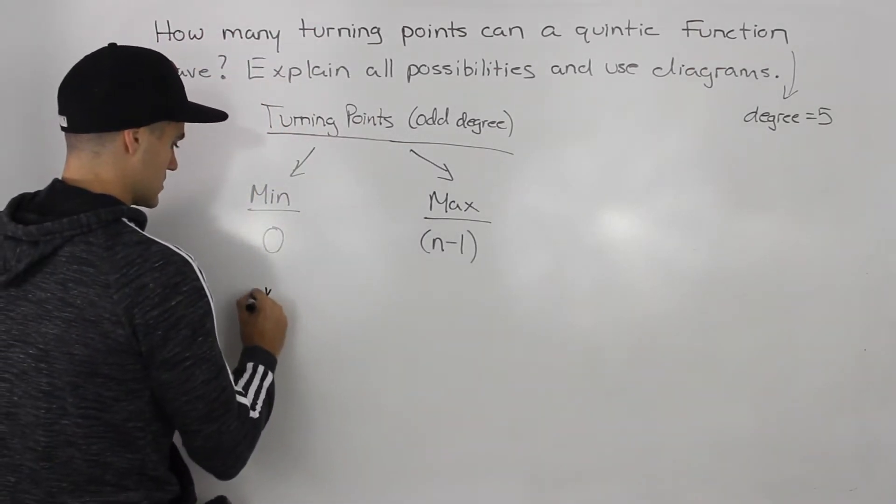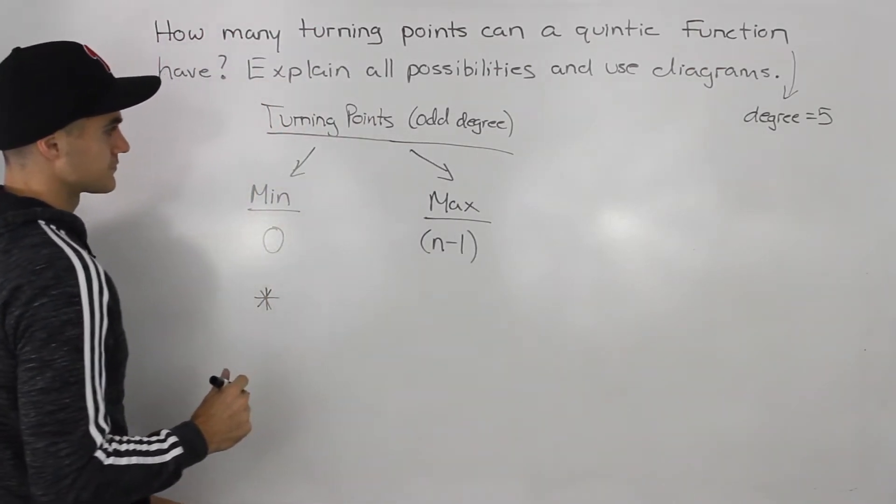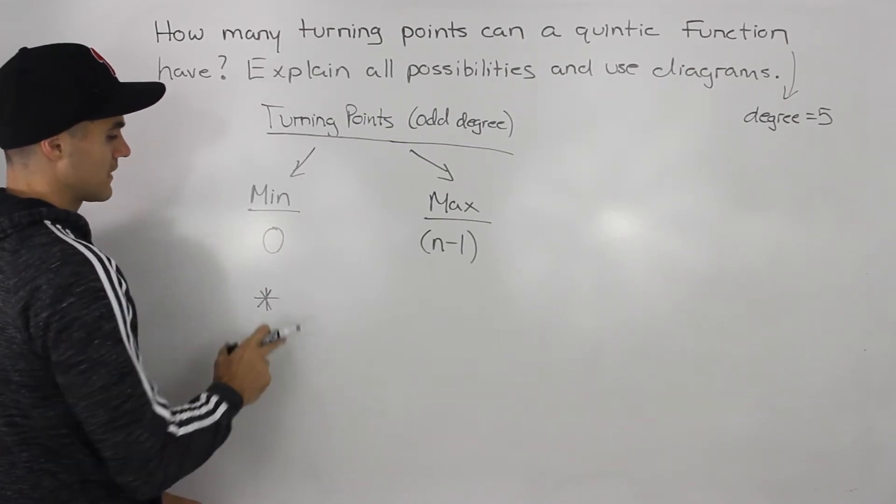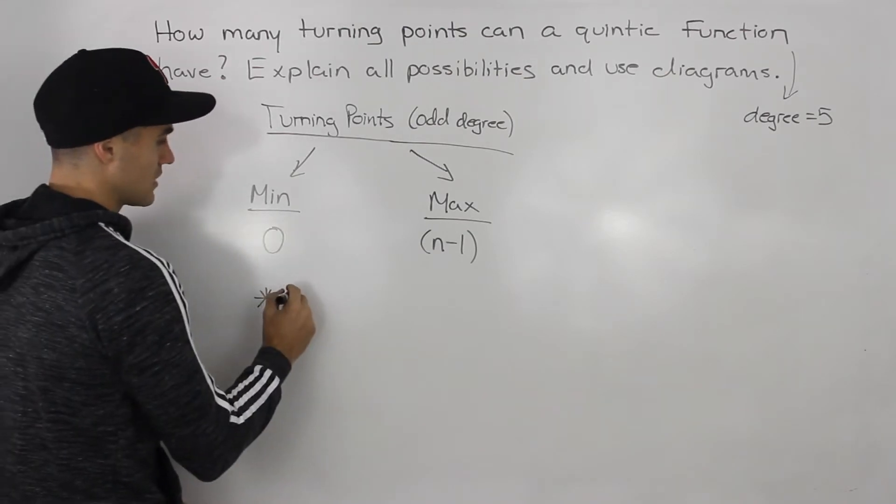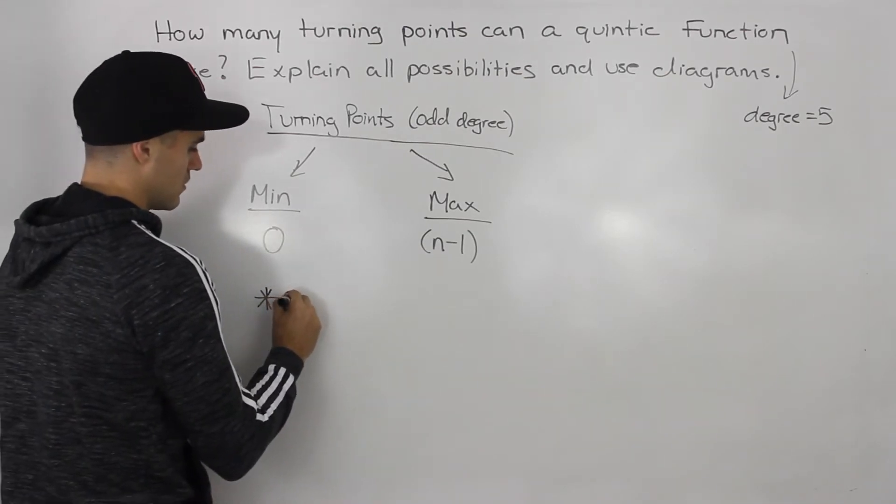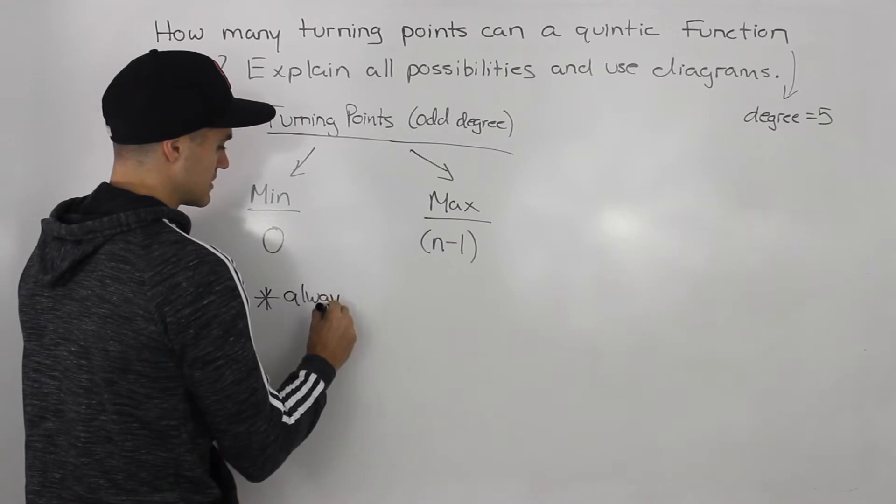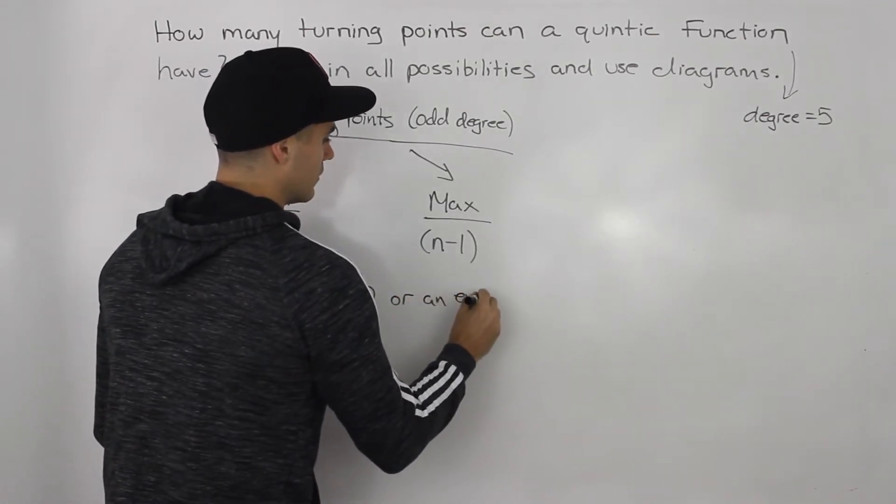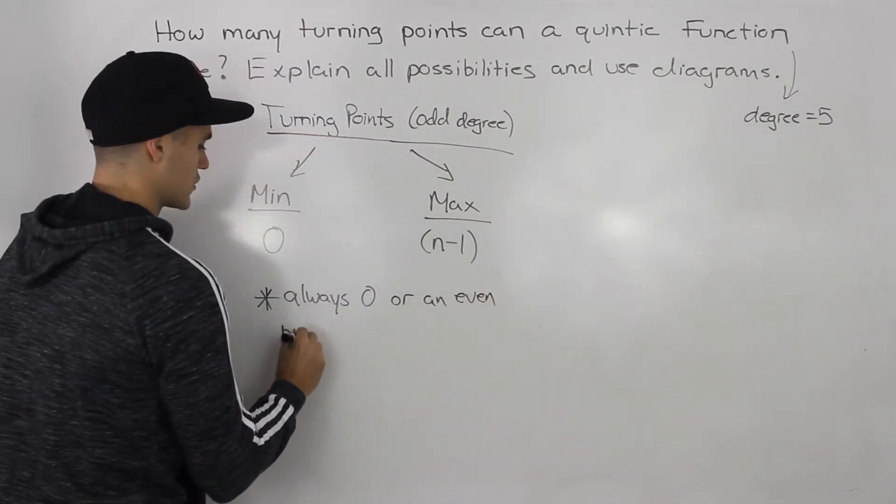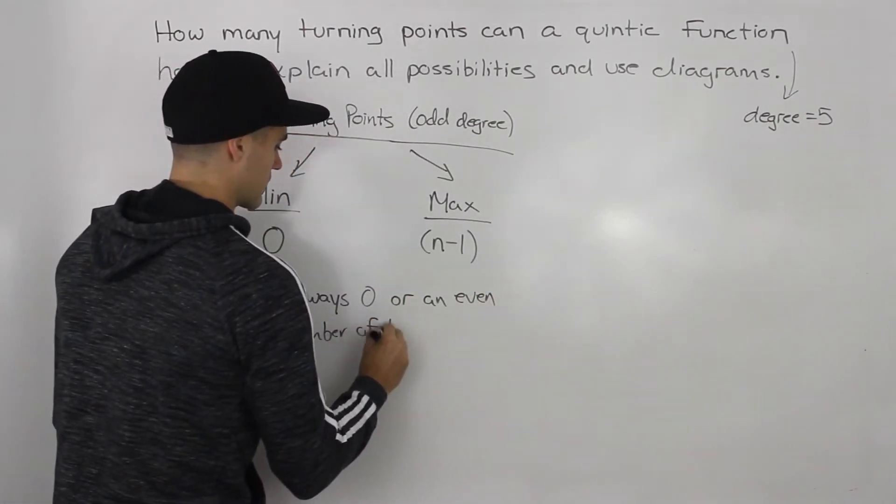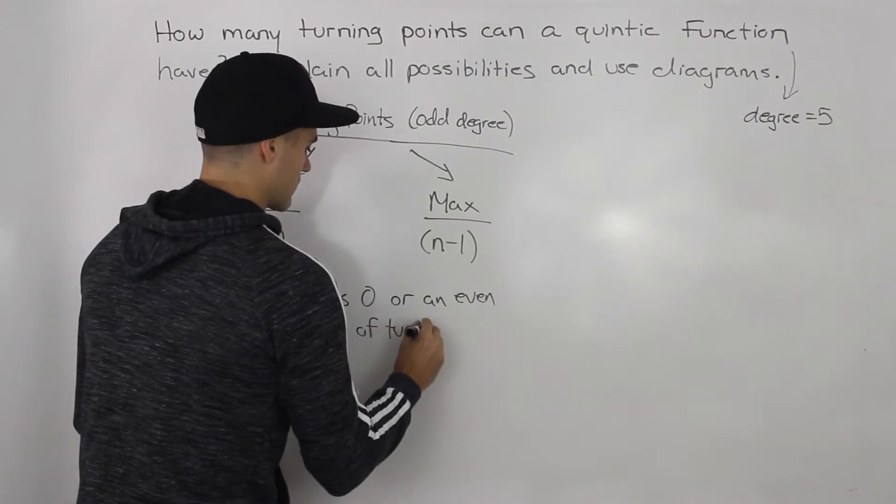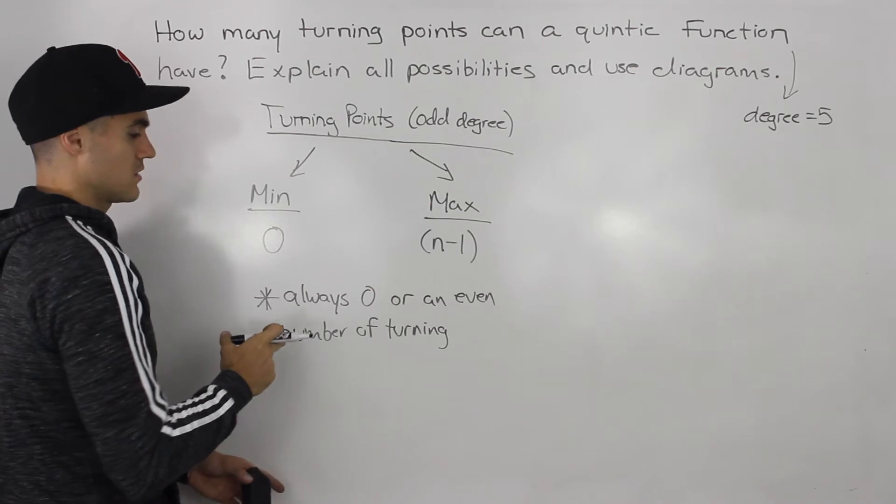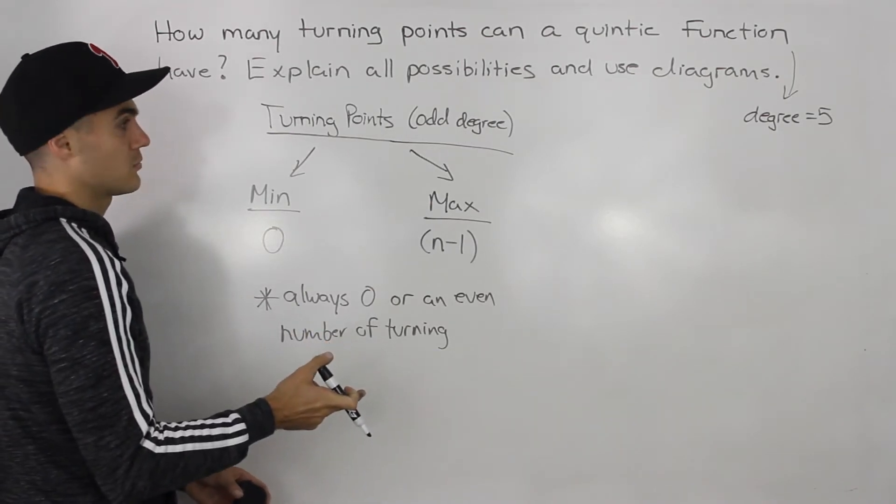Something I want to mention - I may not have mentioned this before - is that an odd degree function always has zero or an even number of turning points. While an even degree function is the opposite, so it always has an odd number of turning points.